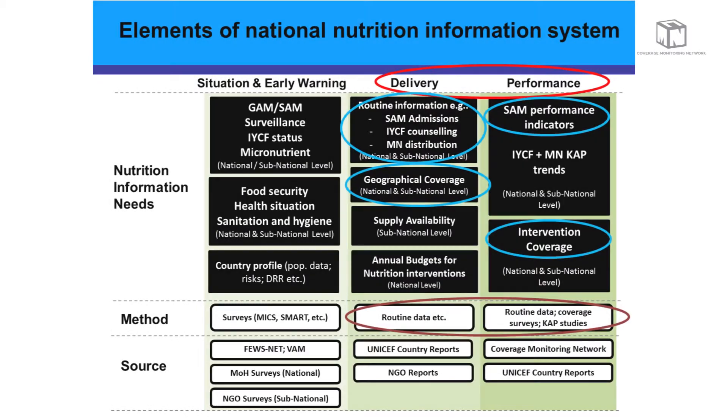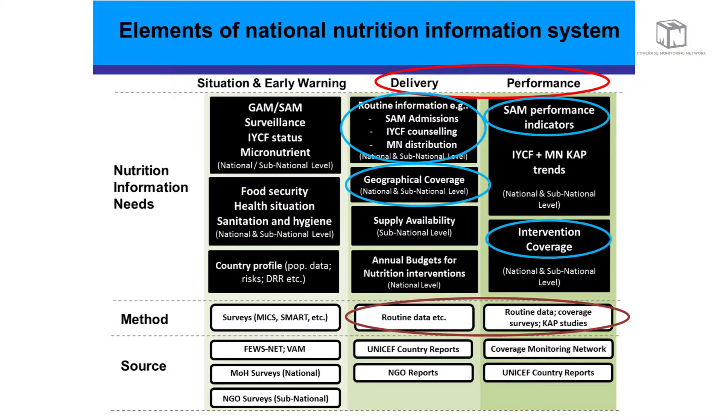These trends are also mirrored on the information side — there are more actors and more information to compile at a country level, a need to advocate with government to take on the information component, and to link different streams of information, so SAM and other intervention information. We need to understand how data from a wide range of sources comes together at a national level, and how SAM information fits within broader efforts to collect, analyze, and use information. I need to thank Saul, because I've stolen his diagram and added to it — this is one way of conceptualizing the different components of an information system.